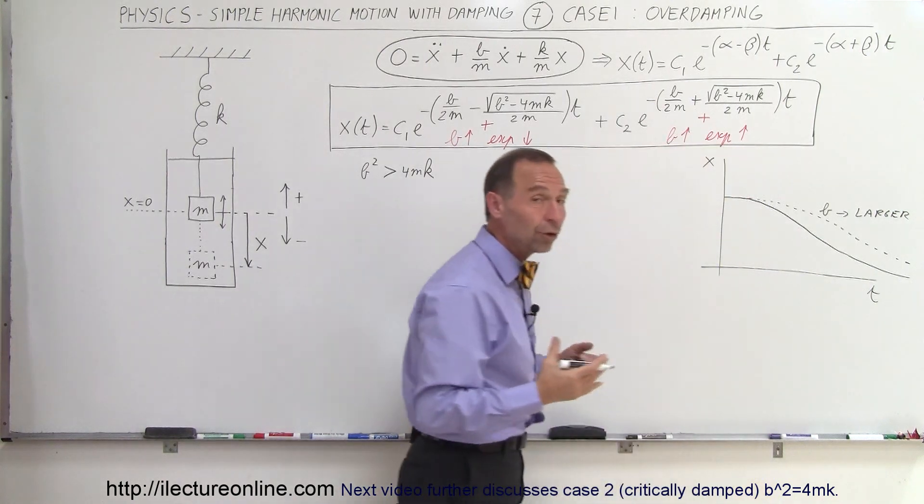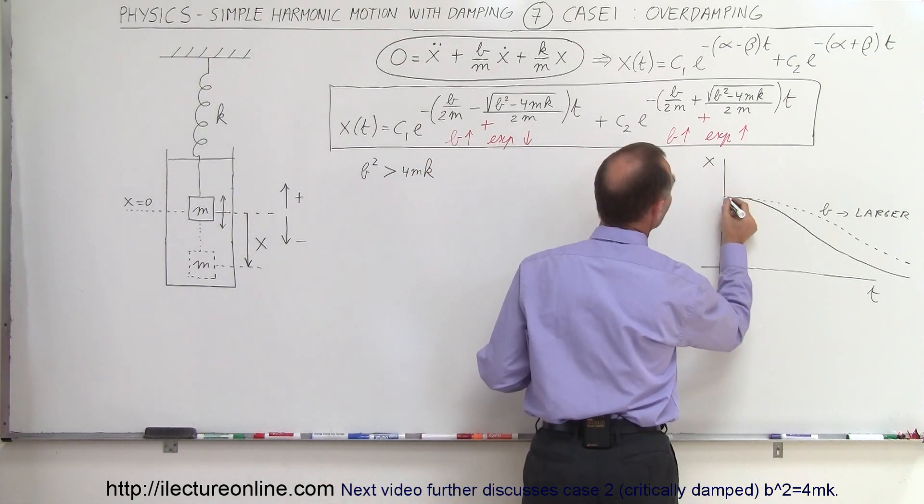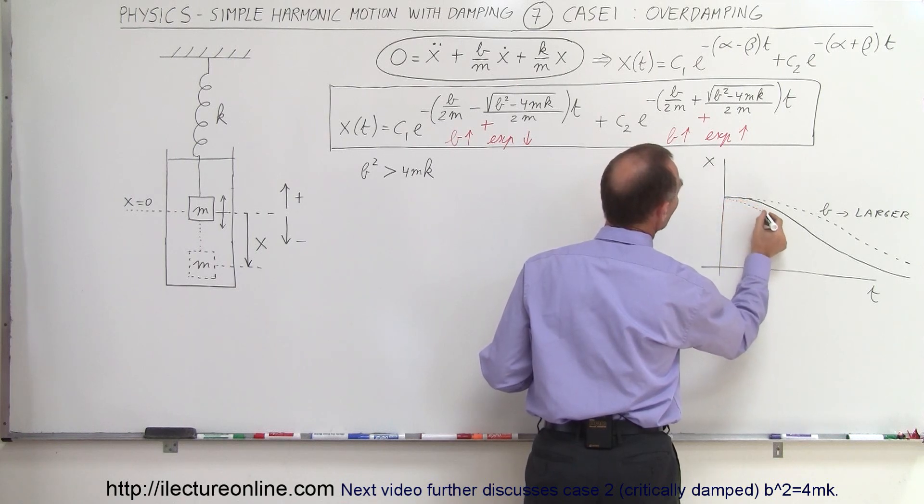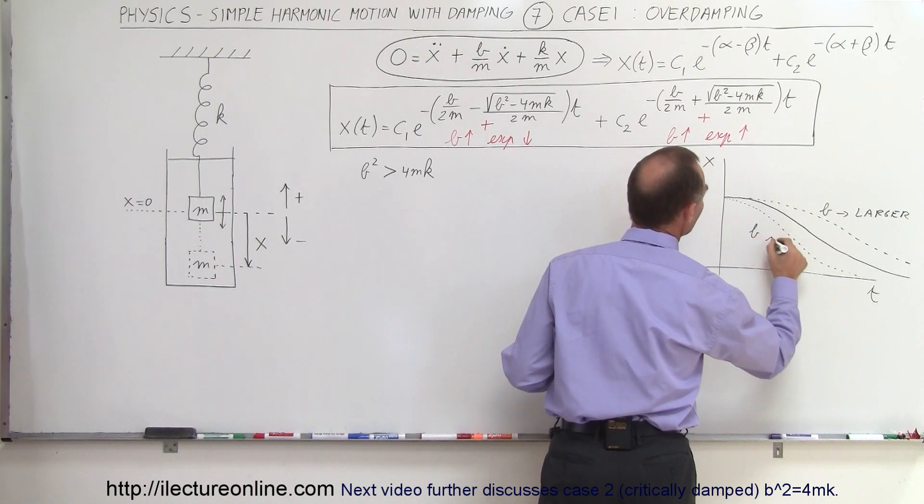And if B becomes smaller, even though you may still have an overdamped case with smaller Bs, then what will happen is, and I'll use a dotted approach here, you'll have a faster decay. And so there would be B being smaller.